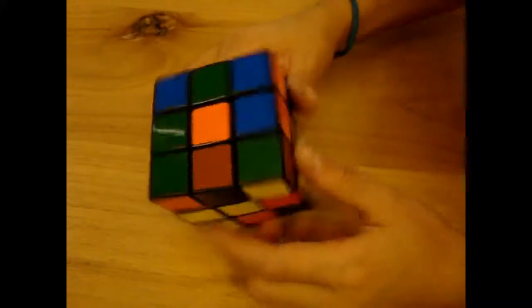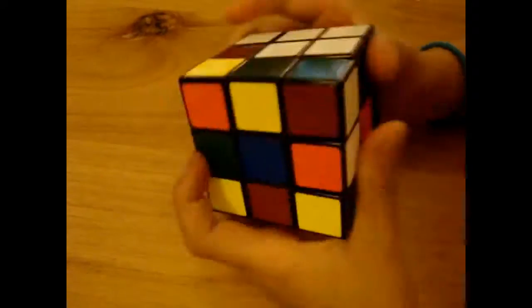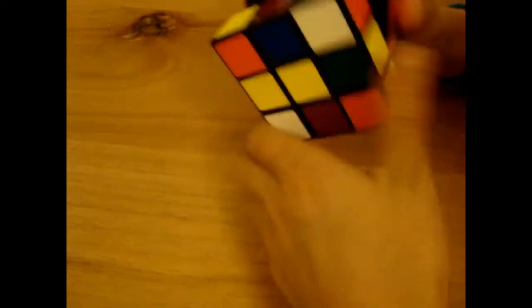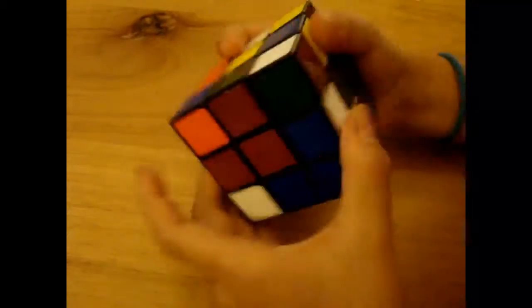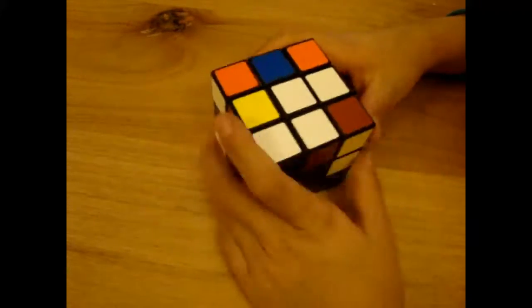How to solve the 3x3 on one side. Well, let's scramble this up. Okay, that should be enough scrambling. And then we'll start with the white side.